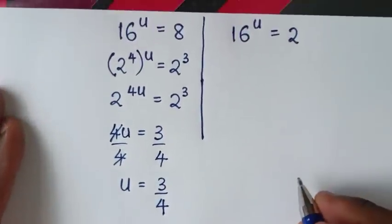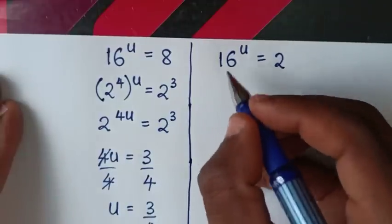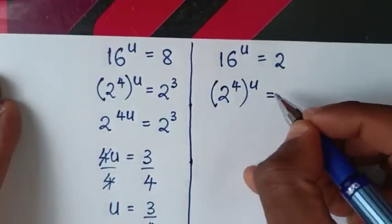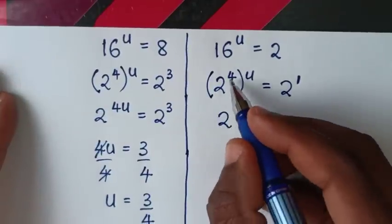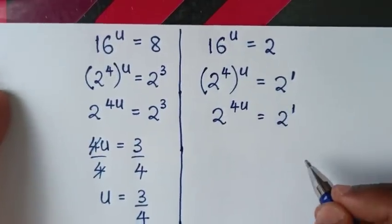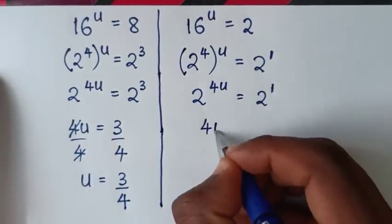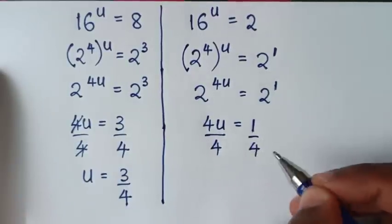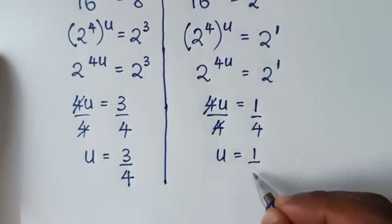From the second solution, to get the value of u: 16 is the same as 2 power of 4, so (2^4)^u equals 2, which is 2 power of 1. It will be 2 power of 4u equals 2 power of 1. Since we have the same base of 2, we compare the powers: 4u equals 1. Dividing both sides by 4, u equals 1 over 4.